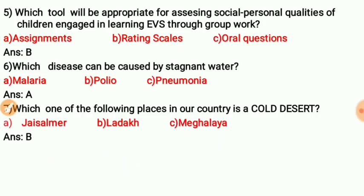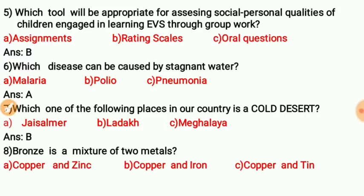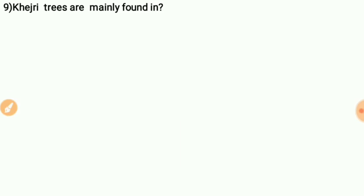Question eight: Bronze is a mixture of two metals. Option C is correct — copper and tin. The mixture of copper and tin is bronze. Question nine: Kajuri trees are mainly found in which conditions? Option C is correct — hot and dry conditions.